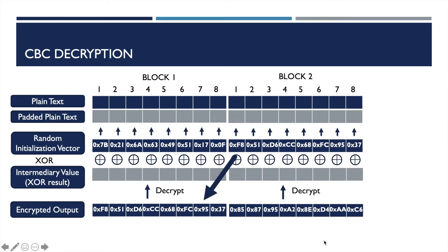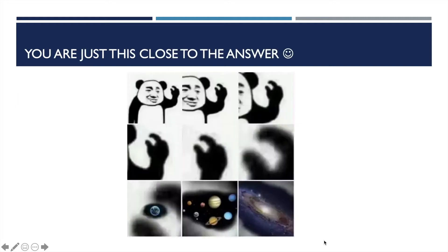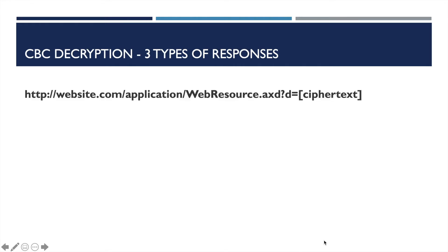Now, let's think from the other direction. What would happen if we want to decrypt the ciphertext? It looks like we need to know the intermediary value to decipher the text, but how? The best part of padding oracle attack is that the server will let you know if you are on the right track. More specifically, you will usually face a link that looks like this, and you can modify the ciphertext in the brackets, and the server will respond differently under different conditions. There are three types of responses.